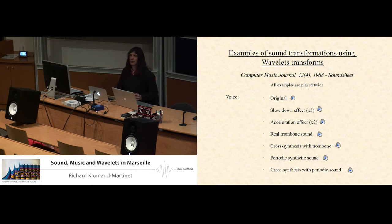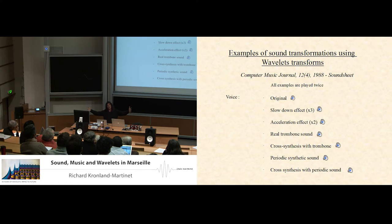Now an example of a slowdown effect, obtained by dilating the wavelet transform. But of course, when you dilate the wavelet transform, you have to take care of the phase because the idea is to keep what we call the formant at the same place. Otherwise, you change the vowels and the message. So this is the slowdown effect with a ratio of three.